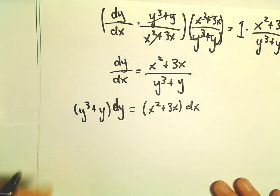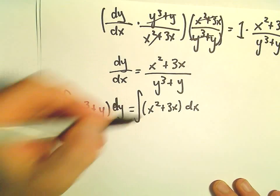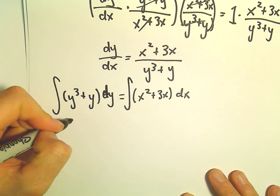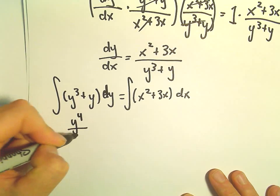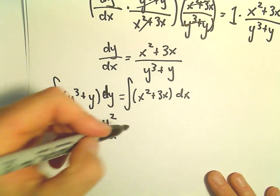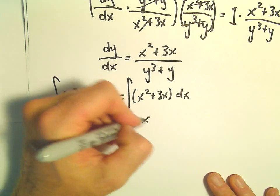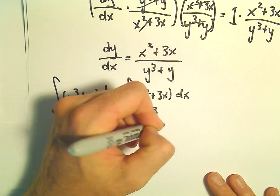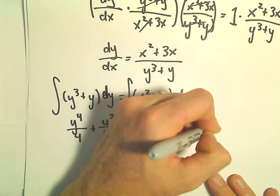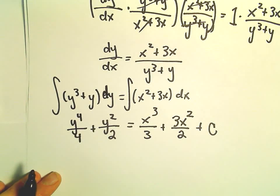And now what we'll do is integrate both sides. So the antiderivative on the left side will get y to the fourth over 4 plus y squared over 2. On the right side, we'll get x cubed over 3 plus 3x squared over 2. That's where I'm going to write my arbitrary constant plus c.